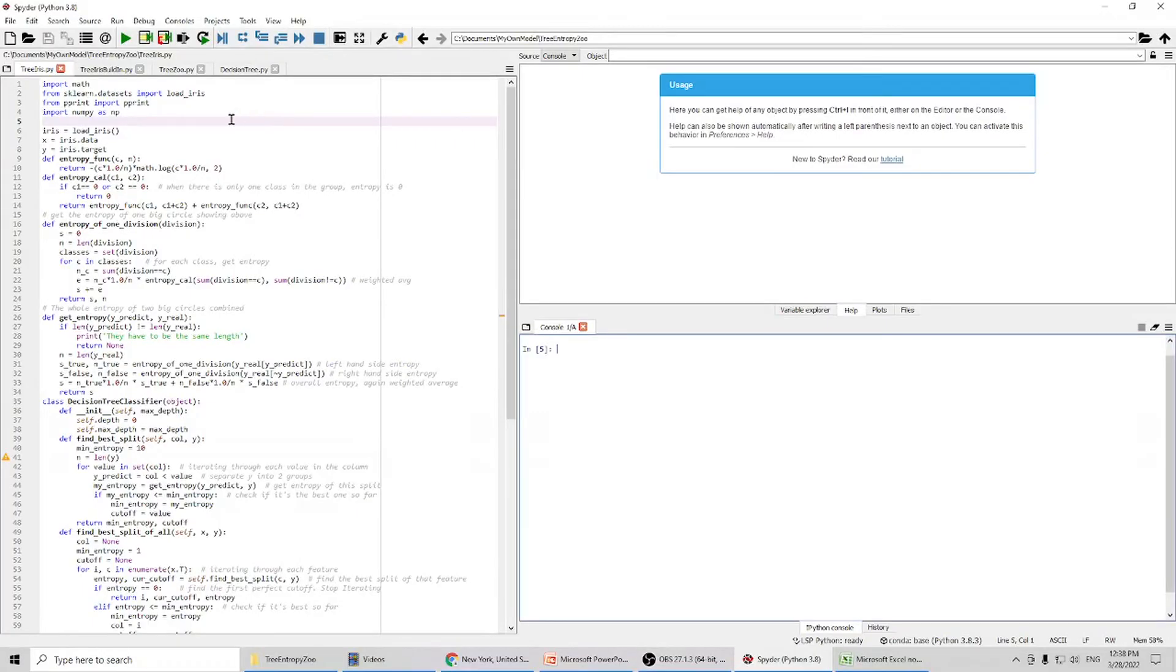First, we are going to load the dataset. And then we will create our functions to calculate entropy and information gain.